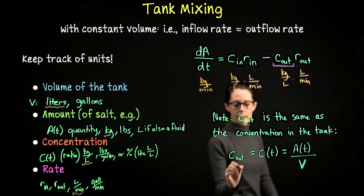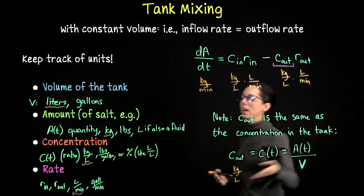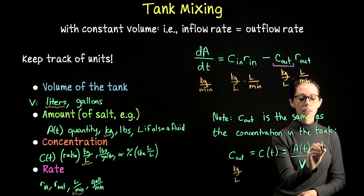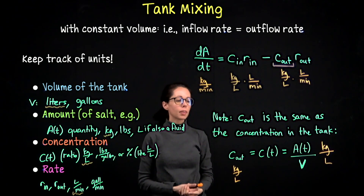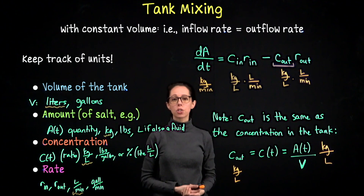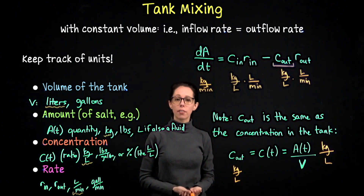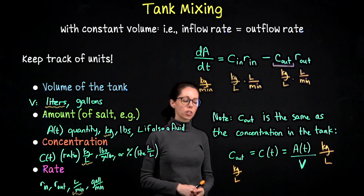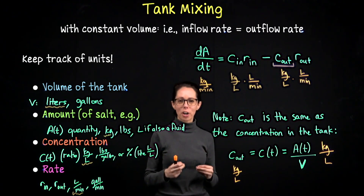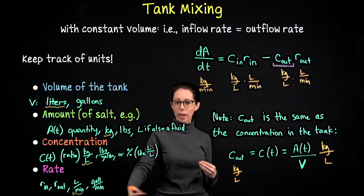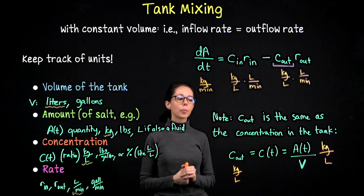We have two examples to do. In the first, we start with a tank of pure water and add a salty mixture, so salinity increases over time. In the second, we start with a tank containing a pollutant and flush it out by putting pure water into the inflow pipe, so we expect the pollutant to decrease over time. Let me step aside and we'll pick up with example one.